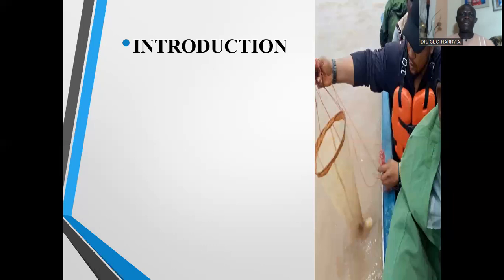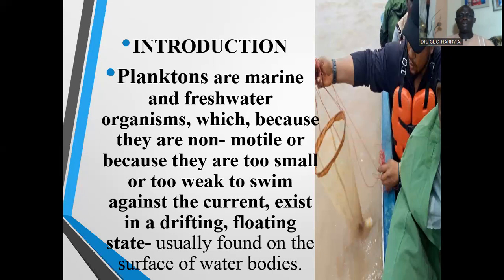What are planktons? Planktons are basically minute organisms found drifting on the surface of water bodies. They are marine and freshwater organisms which, because they are non-motile or because they are too small or too weak to swim against the current, exist in a drifting, floating state. They are usually found on the surface of water bodies. Some of them, particularly the phytoplanktons and the zooplanktons, are too small or too weak to swim against the water current, so they drift along with the water.